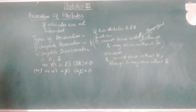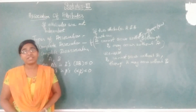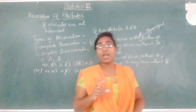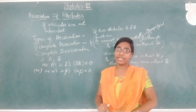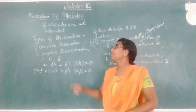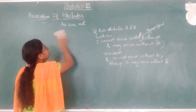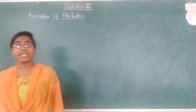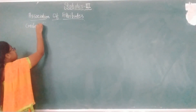Similarly, like the independence of attributes, here also for the association of attributes we have some criteria. You have to clearly remember the independence of attribute criteria, because whenever they are not independent, then only they are said to be associated. So based on those criteria, we are going to write the criteria for association. The two criteria for association are based on the first two criteria of independence of attributes.